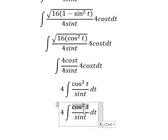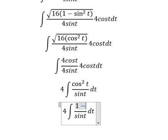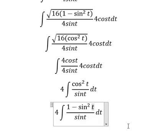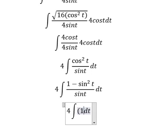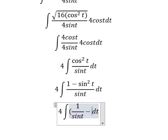We know that cosine squared is 1 minus sine squared t. 1 divided by sine t, and sine squared t divided by sine t equals 1 over sine t minus sine t.